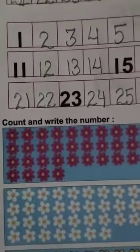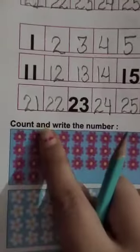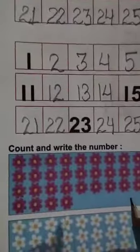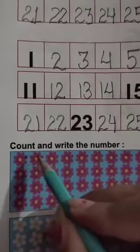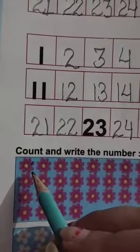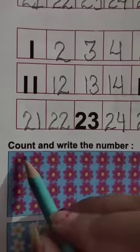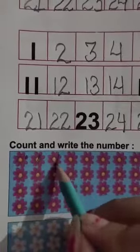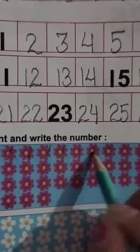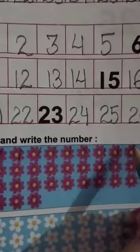Now next is the third part of the worksheet. Count and write the number. We have to count them here. We have to write the flowers here. So start counting. 1, 2, 3, 4, 5, 6, 7, 8, 9, 10.